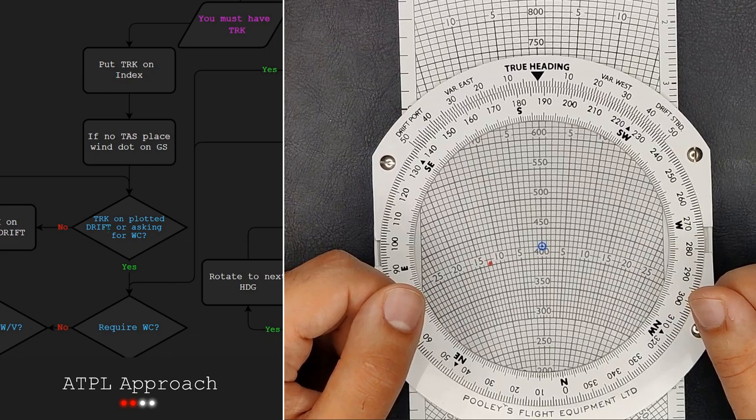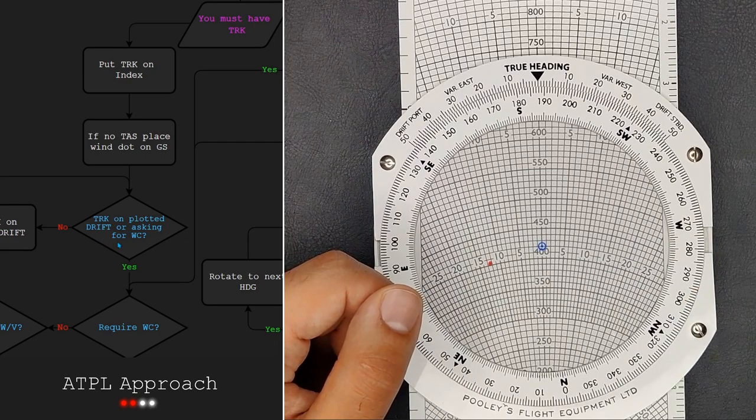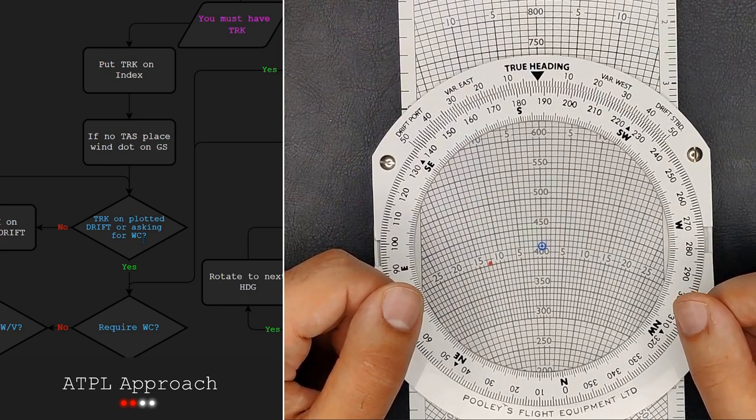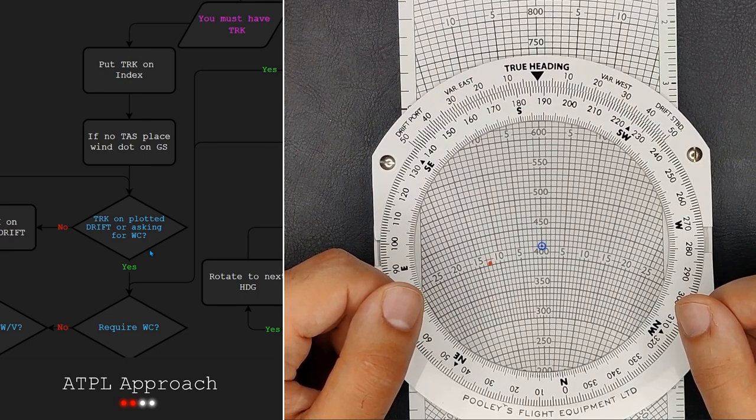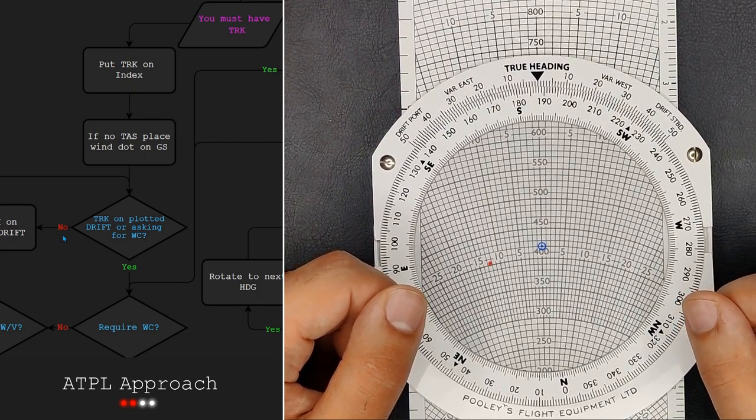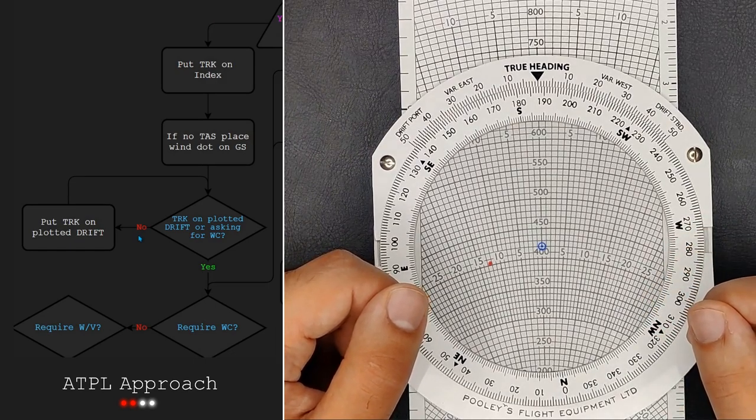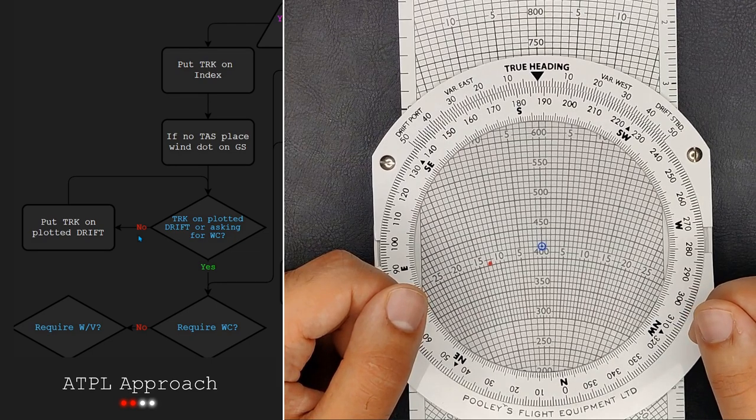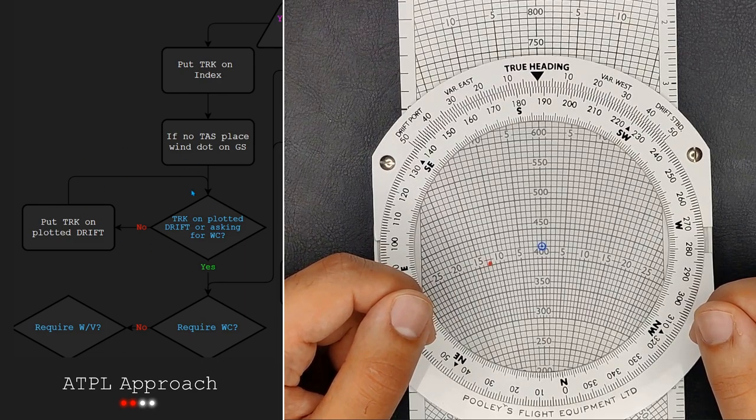This decision here asks if the track is on the plotted drift or if the question is asking for the wind component. And because we have just put our track on the index, it is not on our drift unless we have a drift of zero degrees. So now we start the process of iteration. Iteration is where you put your output back in as an input and we keep doing this until we get close enough to our answer. This is shown by this loop here.